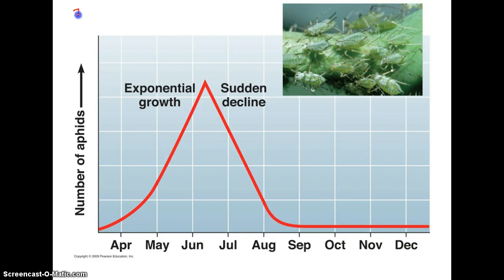The second category is density-independent limiting factors — those that do not depend on the size of a population. Examples include weather, natural disasters, changes in seasons, and human influence. For instance, a population growing exponentially could be suddenly brought down by a wildfire or human activity — that is a density-independent limiting factor.